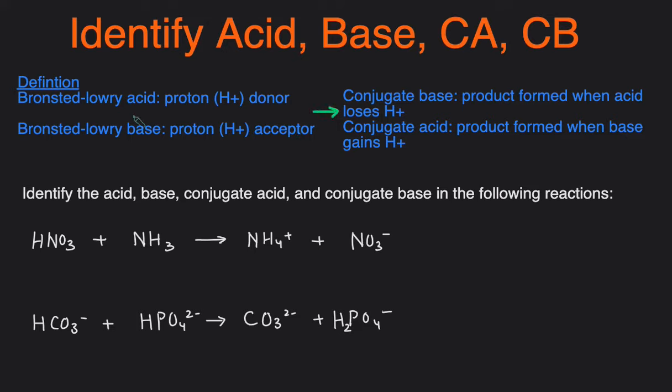You can also remember that the acid and the base will be on the reactant side, and then the conjugate acid and conjugate base will be on the product side. So let's move on to the example where we have to identify acid, base, conjugate acid, and conjugate base in the following reaction.